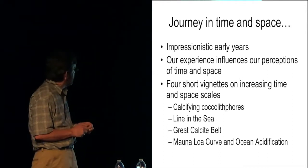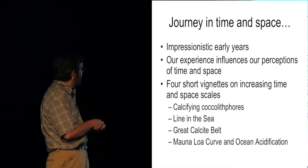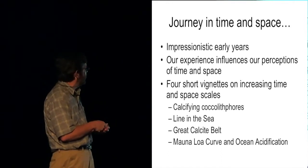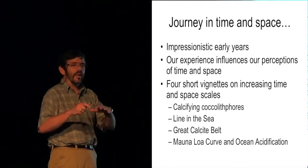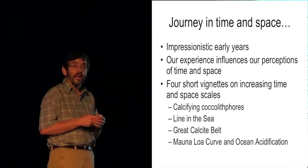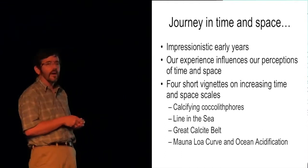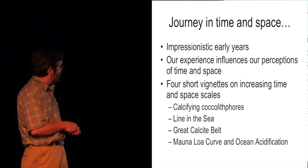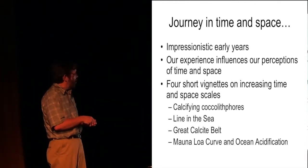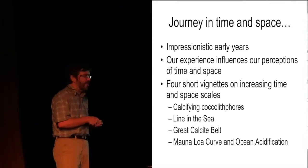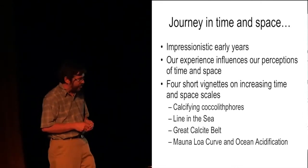I'm going to start with the impressionistic early years. And I'll talk a little bit about how our experiences influence our perceptions of time and space. And I think this is really important for understanding where we as humanity are right now with climate change. I'm going to give you four short vignettes on increasing time and space scales. One on calcifying coccolithophores, one I call a line in the sea, one I call the great calcite belt, and then I'm going to end talking about the Mauna Loa curve and ocean acidification.